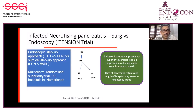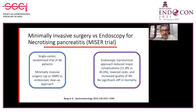The TENSION trial looked at the endoscopic step-up approach versus surgical step-up approach—which included percutaneous necrosis drainage followed by video-assisted retroperitoneal drainage. This was a multicenter randomized superiority trial involving 19 hospitals in the Netherlands. The endoscopic step-up approach was not superior but equal in reducing major complications and death. The rate of pancreatic fistulas and length of hospital stay was lower in the endoscopic group. The MISER trial found endoscopic transluminal approach reduced major complications, lowered cost, and increased quality of life.